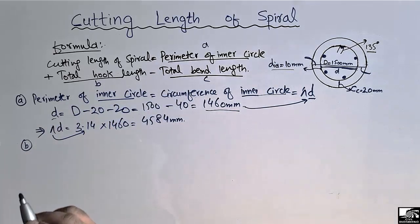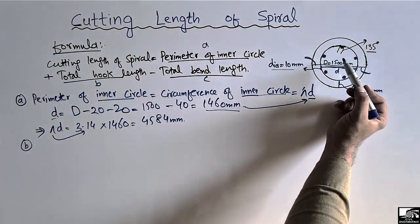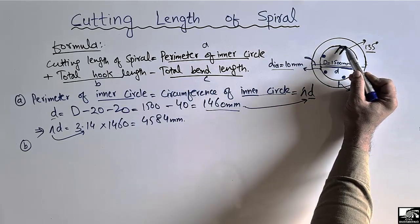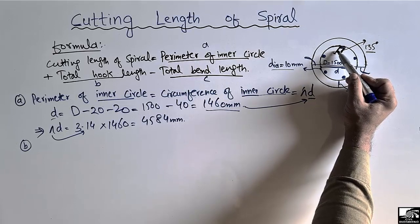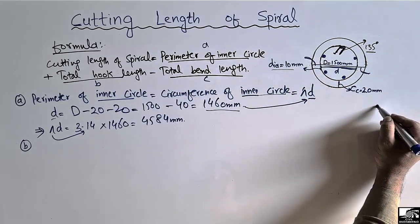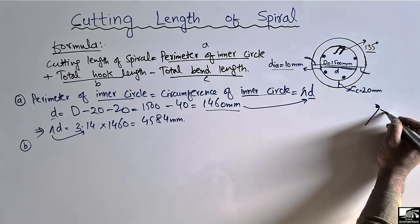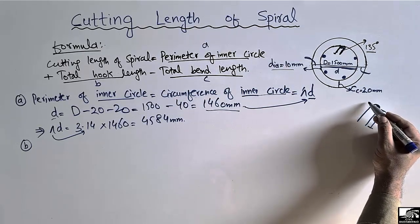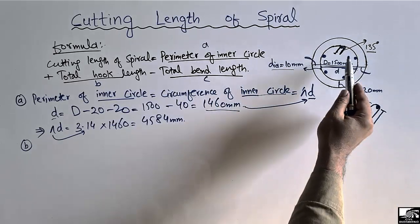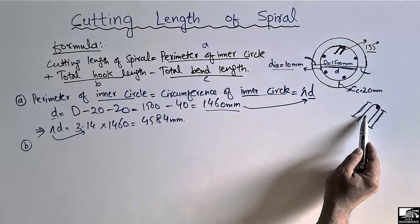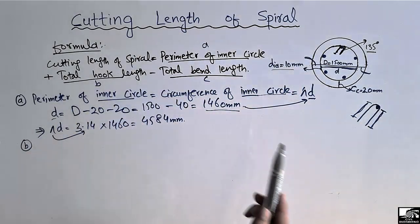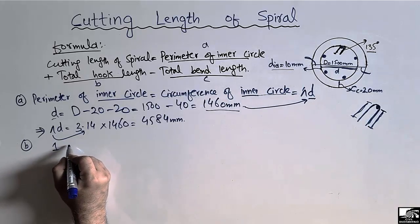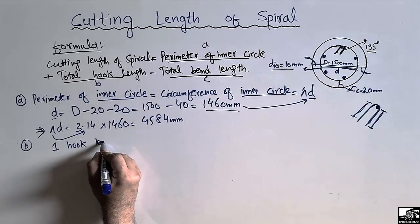Now we calculate the second unknown: total hook length (B). The hook length is the length of the spiral that is being bent — from the bend point to the end of the bar. The spiral has two hooks, one at each end. So we will have two hook lengths to account for in the total.